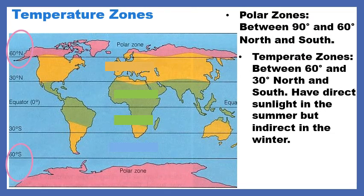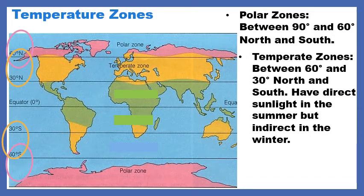Next, we're going to have temperate zones. If you look at that word really close, it looks like temperature, but it's pronounced temperate. These are between 60 degrees and 30 degrees north and south. Here is north, here is south, and these are called temperate zones. We're in a temperate zone — between 60 degrees and 30 degrees north. Think of living in Buffalo: we experience all four seasons because we have direct sunlight in the summer, so our summers are warm, but indirect in the winter, so our winters are cold. This is the area where you get all four seasons.